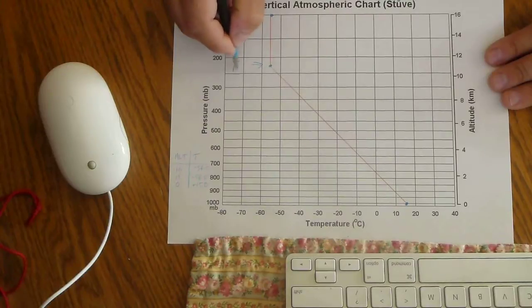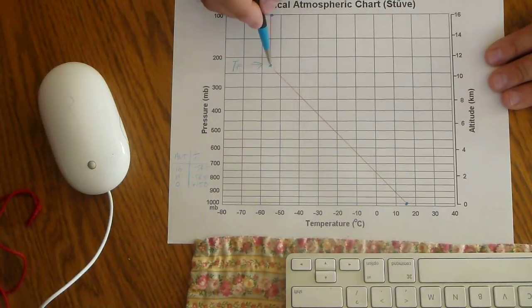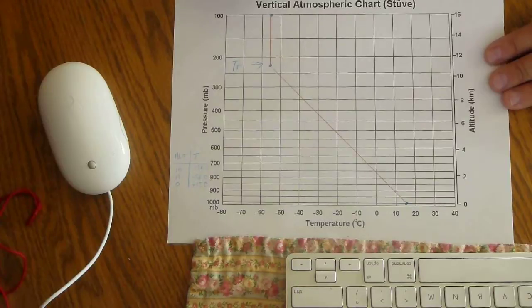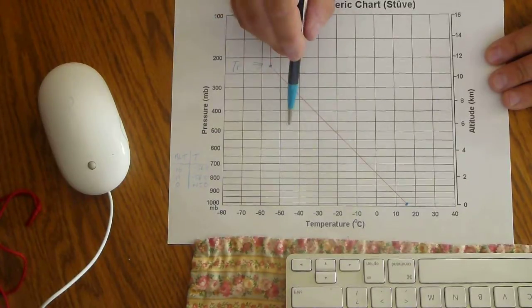Then you notice this place right here. This is what we call the tropopause. Suddenly, the temperature levels off and stays relatively constant as you go up. Up here is the stratosphere, and down here is the troposphere.